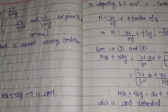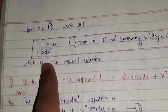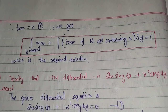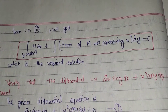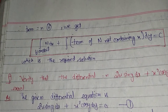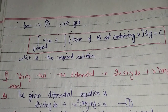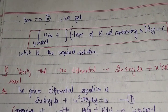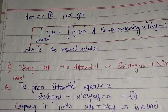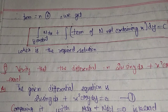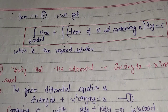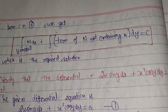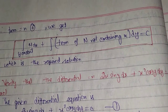The solution uses the sufficient condition: integration treating y as a constant of M dx, plus integration of the terms of N not containing x, with respect to dy, equals C. The value of M is taken from the differential equation and integrated treating y as a constant — meaning y is not integrated, it is treated as a constant. Then from N, only the terms not containing x are integrated with respect to y.